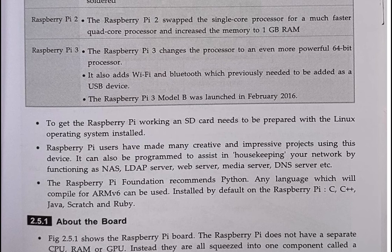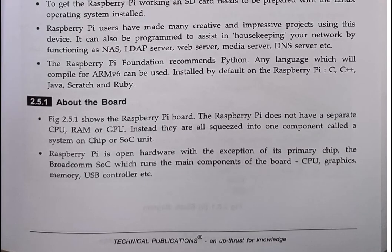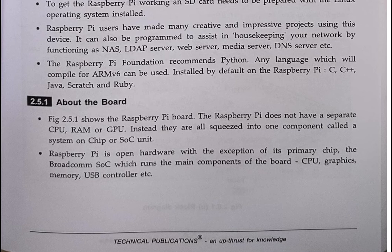Now we will look at the board and its contents. The Raspberry Pi does not have any separate CPU, RAM, or GPU. Instead, they are all squeezed into one component called a System on Chip, or SoC unit. So all components — CPU, ARM, GPU — are placed on the same board. The SoC runs the main components of the board: CPU, graphics, memory, and USB controllers.